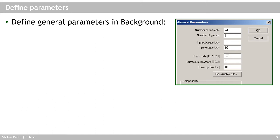In your zTree, now is the time to open the background — you double click background and then you see the general parameters window, this dialog field. Here we can set how many subjects in total we want in our experiment. Let's say we have a lab with 24 computers, and we would enter 24 here. Since we wanted groups of four subjects, that means we get a total of six groups of four subjects in the 24. We don't want any practice periods for the time being. We want 10 paying periods, so we have subjects play the same game 10 times in a row.